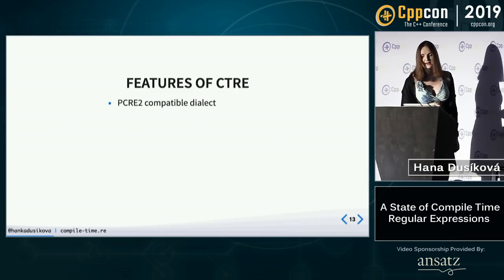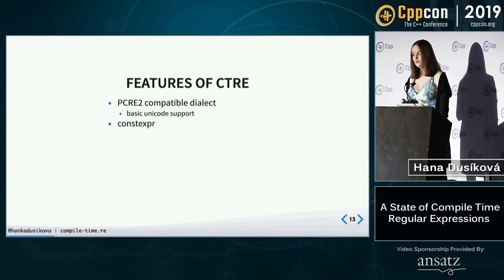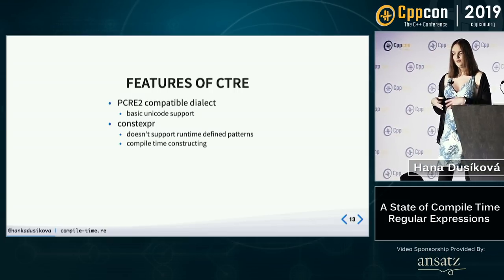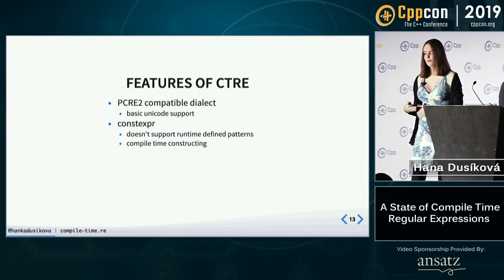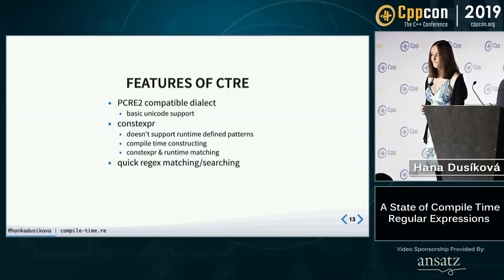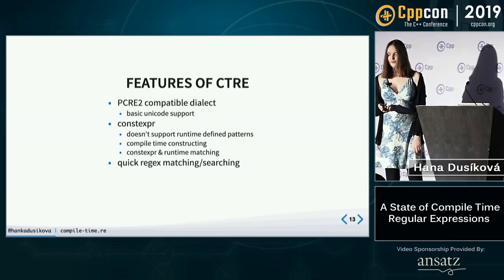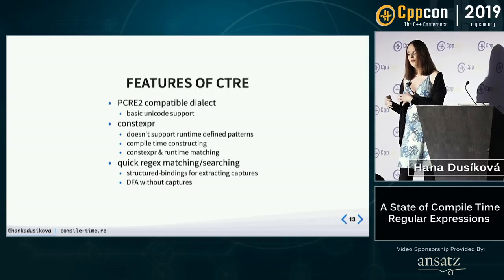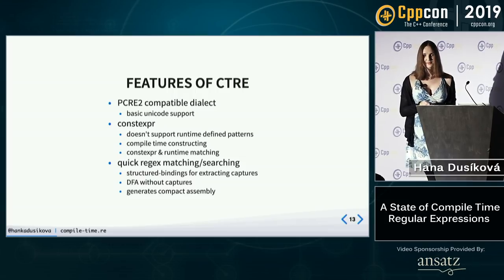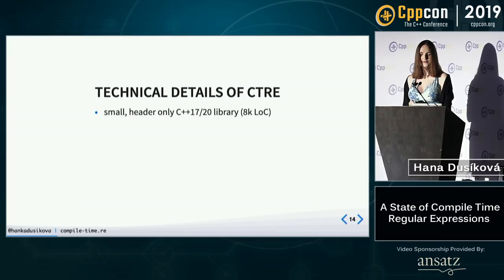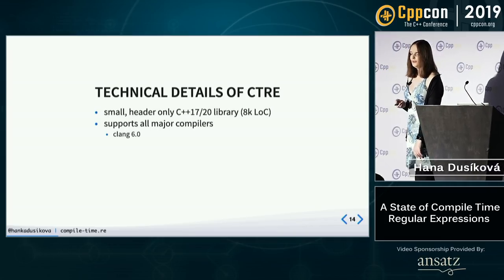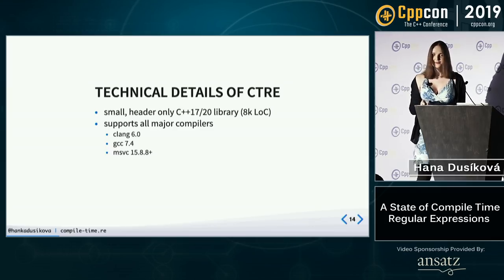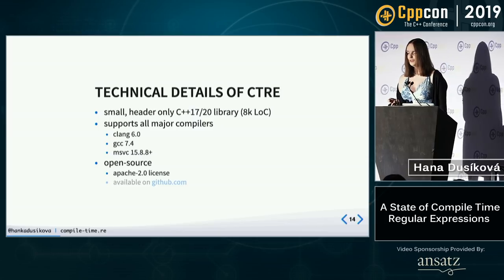Features of the library: it's a PCRE2-compatible dialect with basic Unicode support. It's constexpr and doesn't support runtime patterns — everything is done during compilation. But it supports constexpr and runtime matching, giving you very quick regular expression matching and searching. It supports searcher binding, and DFA without captures. It generates really nice assembly. Details: it's a small header-only library supporting all major compilers — Clang, GCC, MSVC — thanks to support from compiler developers, especially from Microsoft. It's open source, Apache 2 license, available on GitHub.